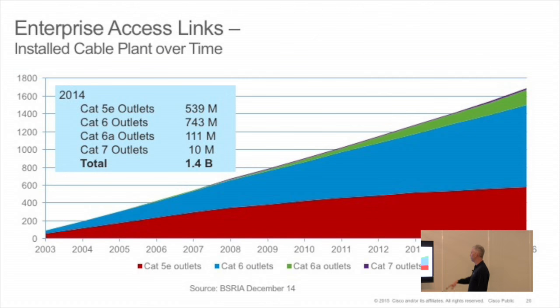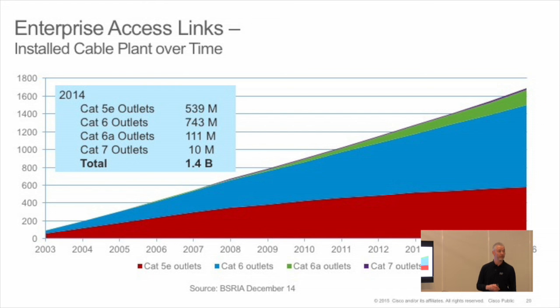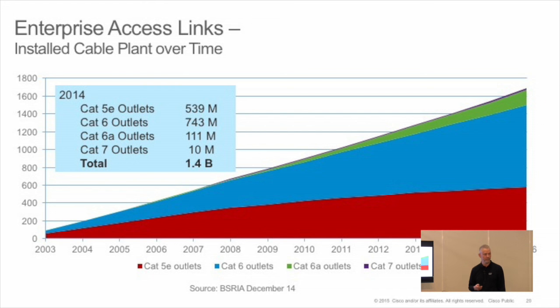More than 4 billion megabit and 1 billion gigabit ports sold in the last 20 years. Install base estimate: 1.4 billion, of which 1.3 billion are Cat5e and Cat6. That is the install base I'm working with.